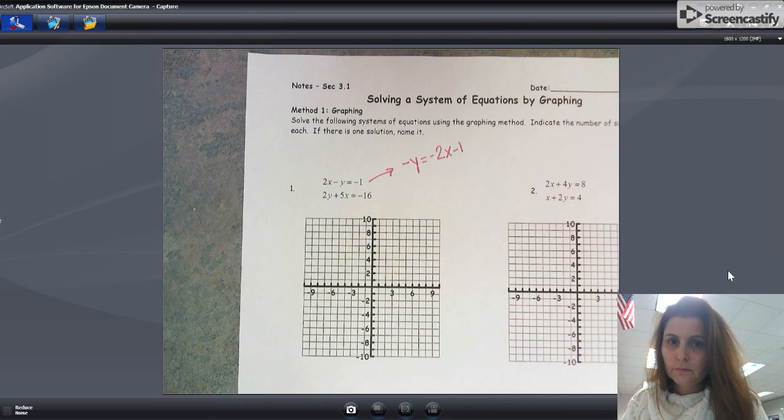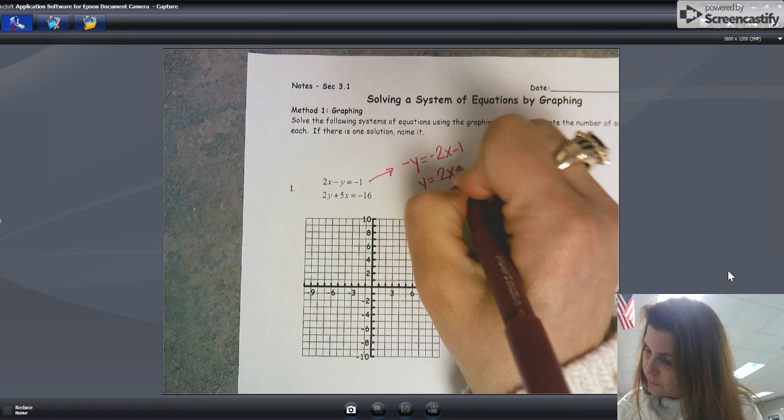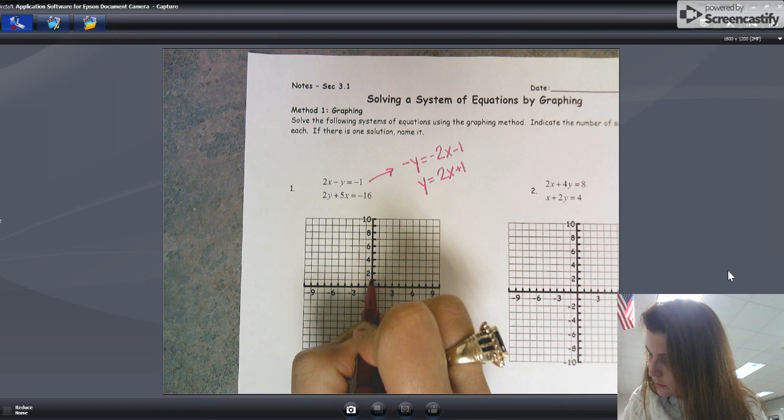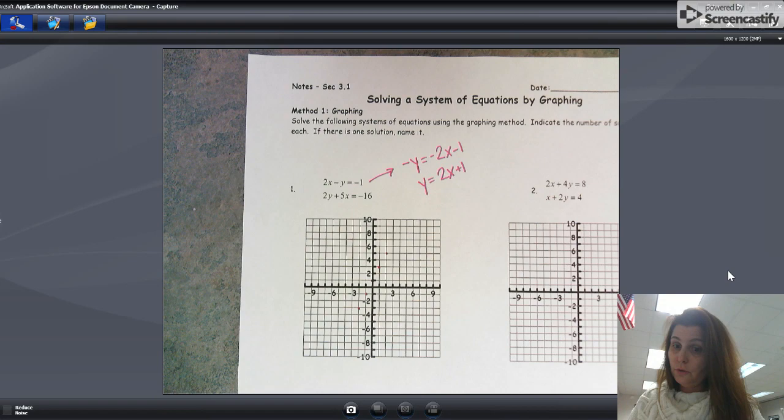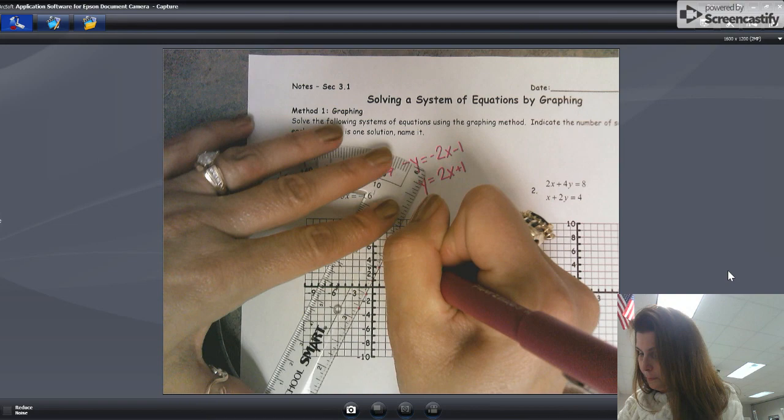And then I'll divide by negative one. There we are. Now I can get that graphed easily. That is a y-intercept of one and a slope of up two over one. Up two over one, and just for good measure I'll go down two back one, down two back one. There we are. Use a straight edge - you're going to need to use a straight edge for graphing systems.